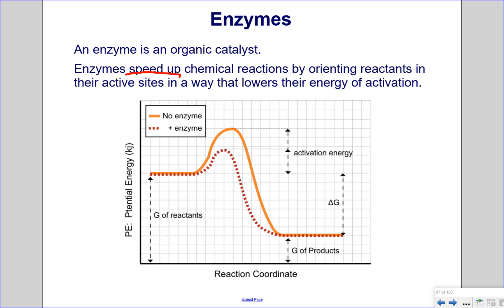In this graph we see a reaction taking place without an enzyme — that's the solid orange line. With an enzyme is the dotted red line. As we can see from the graph, the activation energy for the dotted red line with the enzyme is much less than the solid orange line without the enzyme.